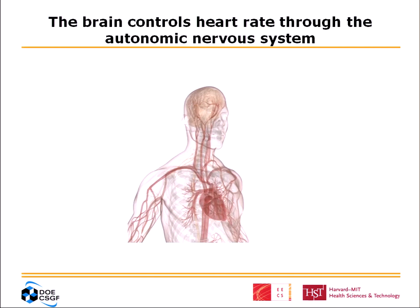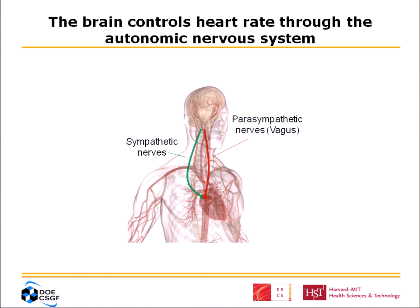So how is heart rate controlled? The heart rate is controlled by the brain. In this illustration, we see that the autonomic nervous system, which is the communication network from the brain to the heart, actually consists of two branches: the sympathetic and the parasympathetic. These are akin to a gas pedal and a brake on a car. The sympathetic system speeds up heart rate, shown in green because green means go, and the parasympathetic is like the brake — it slows down heart rate, shown in red. I'll stick with this color scheme so it's consistent.